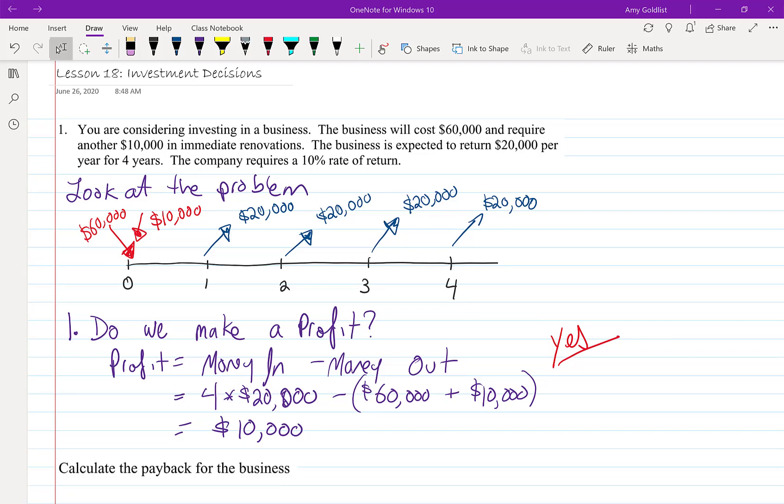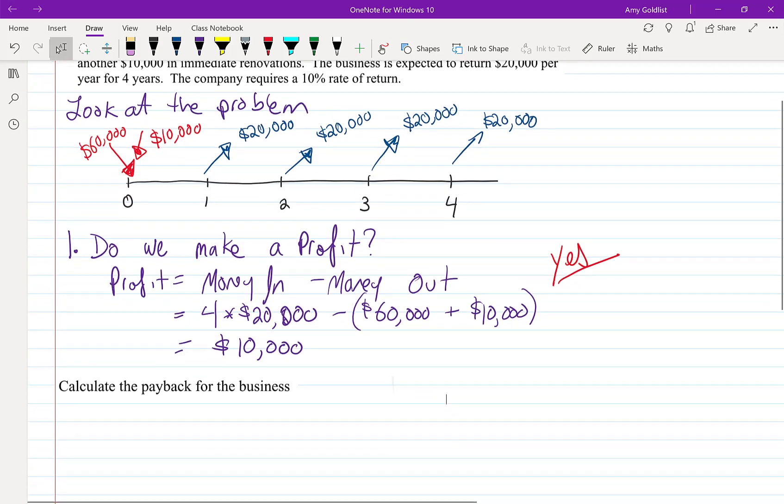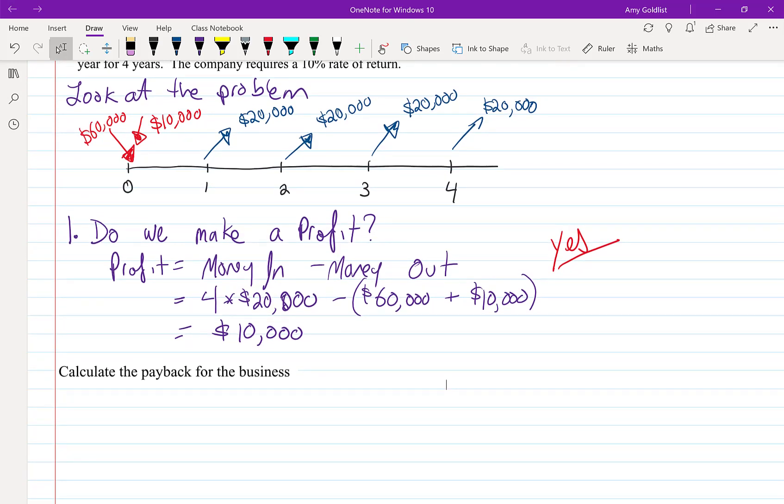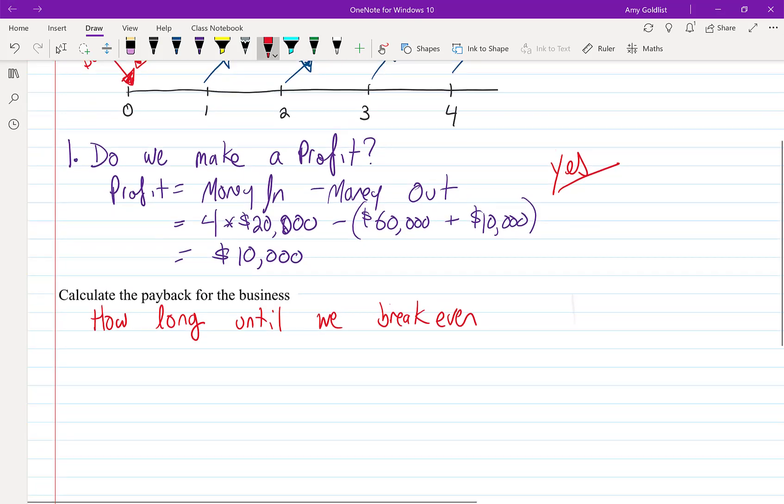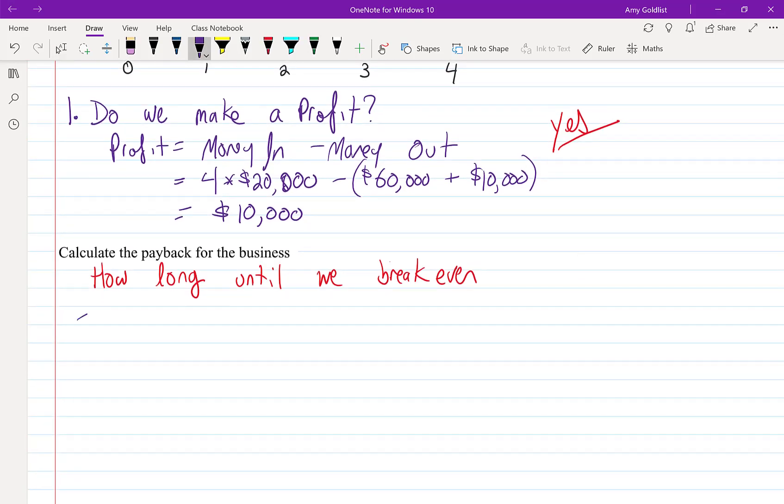Next, what we're going to do is look at the payback for this business. So what this means is we're going to take this business and look at how long a period of time until we break even. We're going to look at our investment on a time-by-time basis. I'm going to start with Time 0 and say what my cash flow is (money in or money out) and what my balance is.